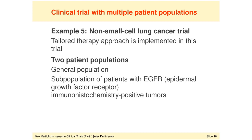The sponsor is pursuing two claims simultaneously: efficacy in the general patient population and in the predefined subpopulation. It takes only one significant result to claim that the experimental treatment is effective. For example, the treatment may not work in the overall population but may be highly beneficial in the EGFR-positive patients. The underlying WIN criteria are actually the same type of clinical decision rules as in example one — the prostate cancer trial — or example four — the type 2 diabetes trial.